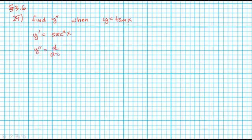it might be helpful to think of that as secant x quantity squared, which allows us to use the power rule and the chain rule.